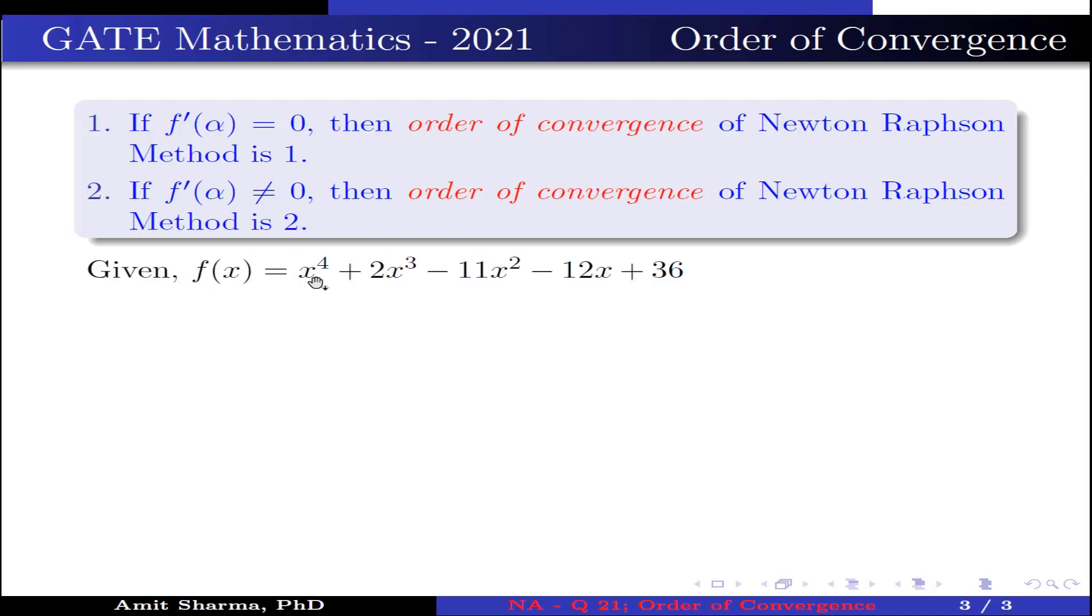Now given f(x) = x^4 + 2x^3 - 11x^2 - 12x + 36 and α = 2 is a root of f(x). Now f'(x) = 4x^3 + 6x^2 - 22x - 12. This implies f'(2) = 0.